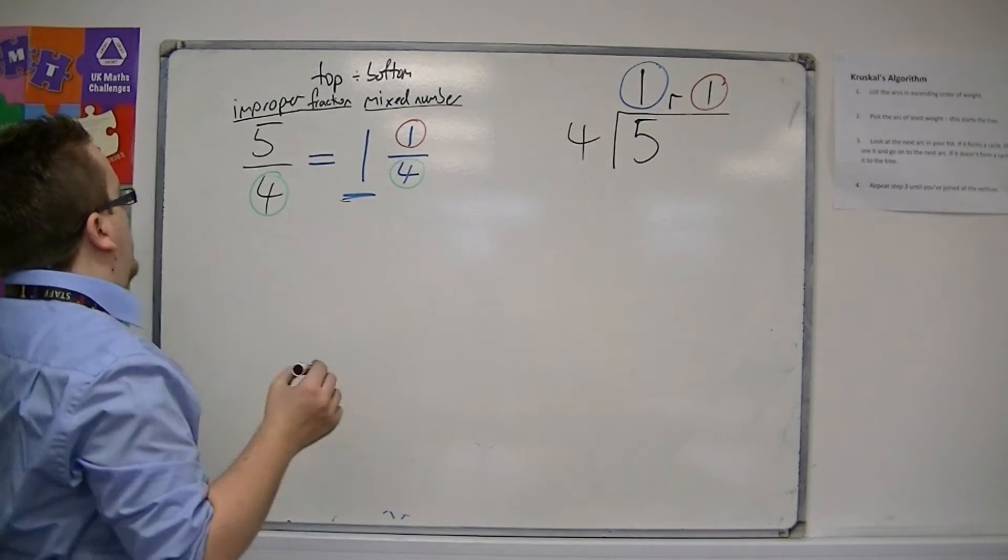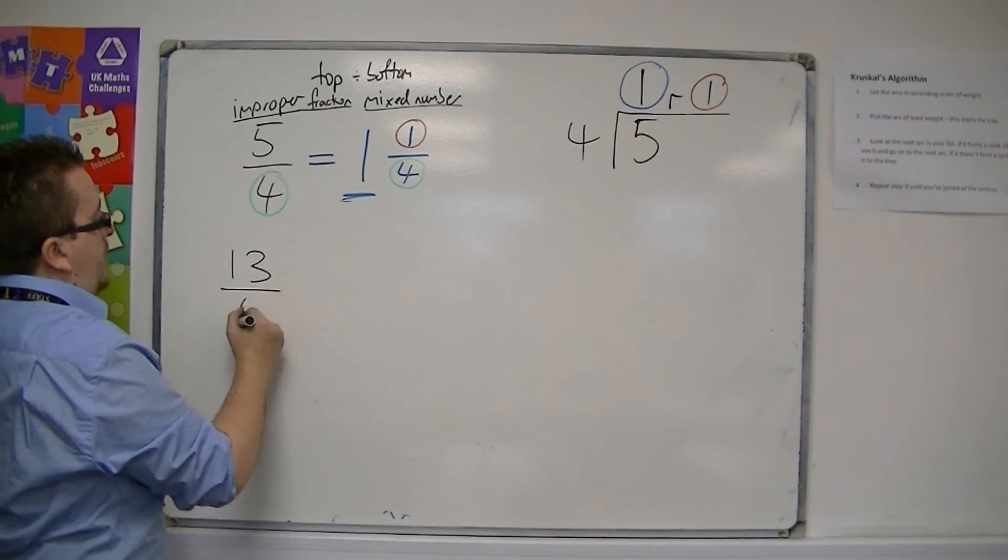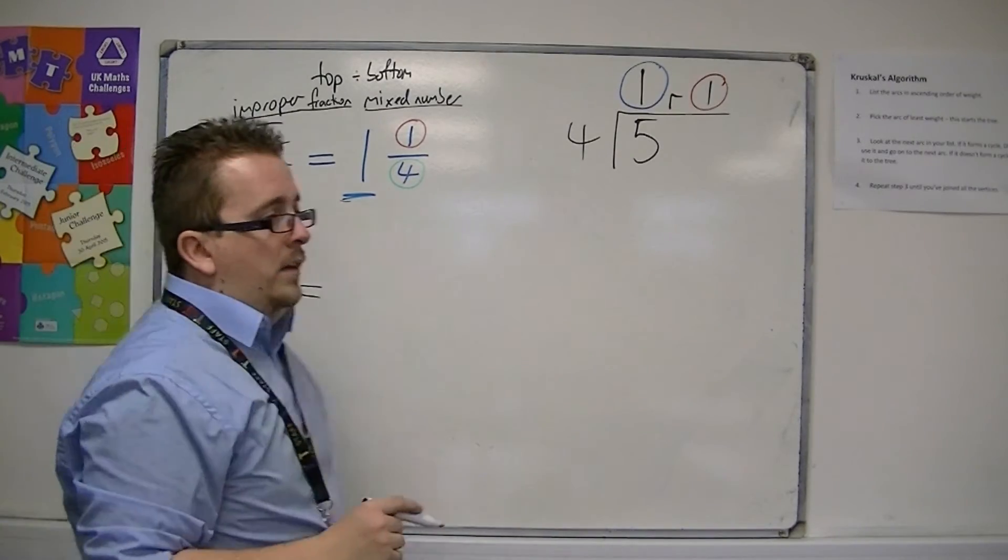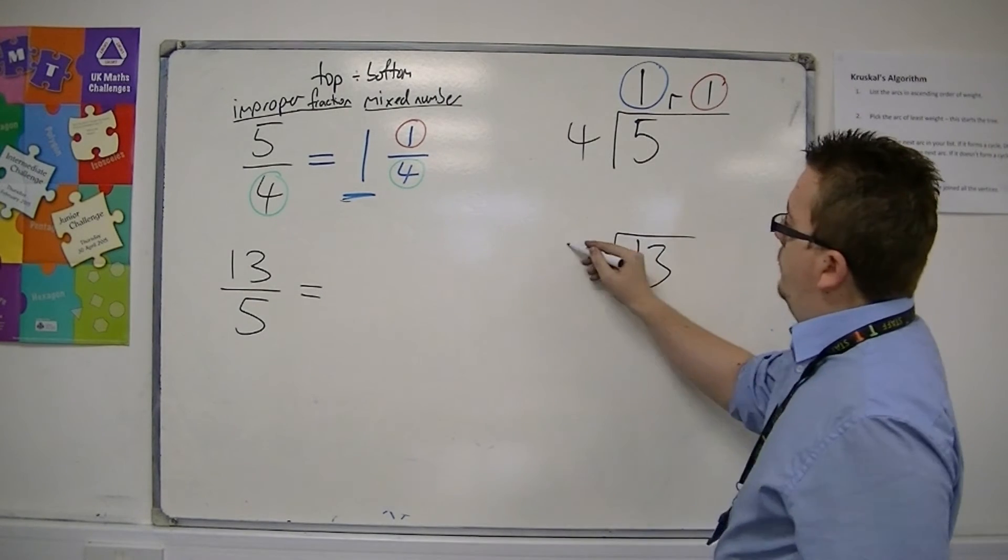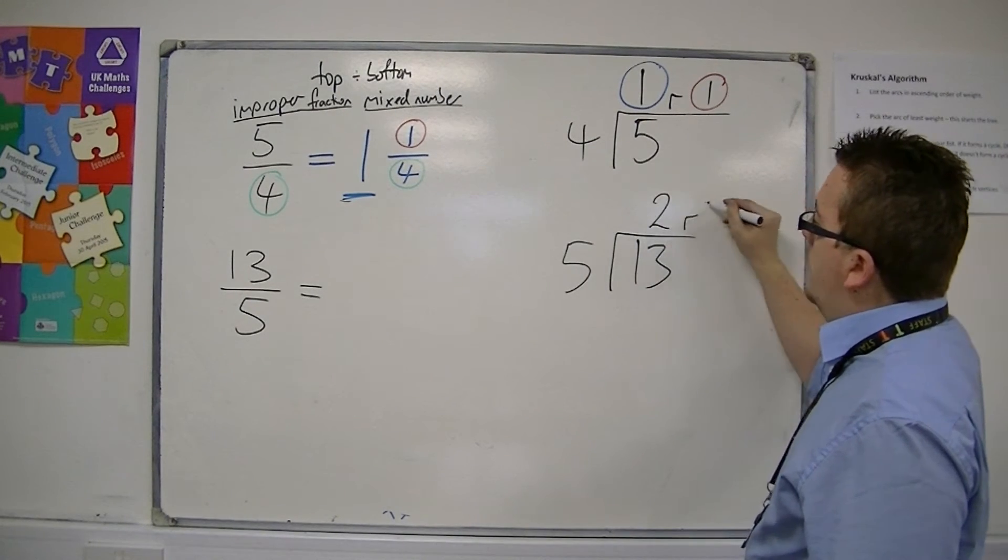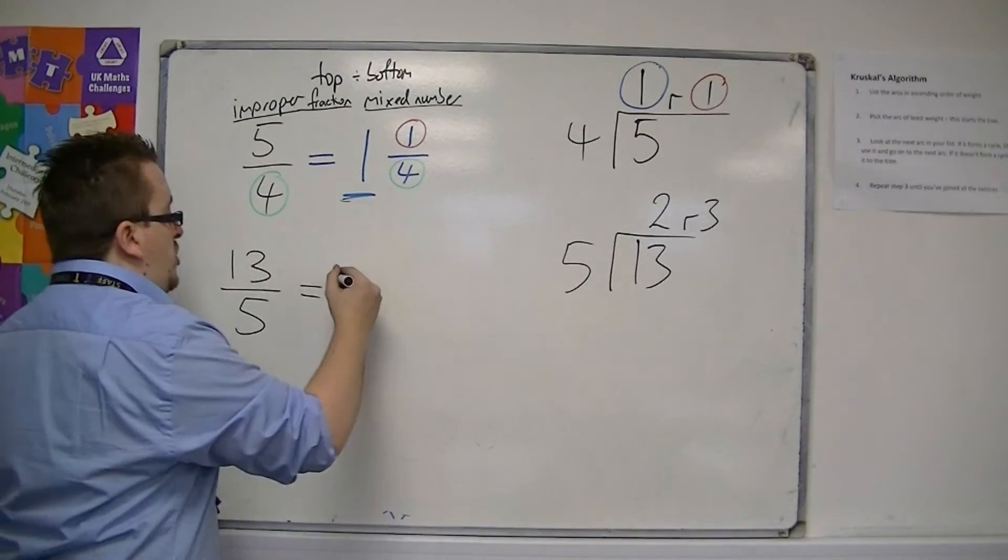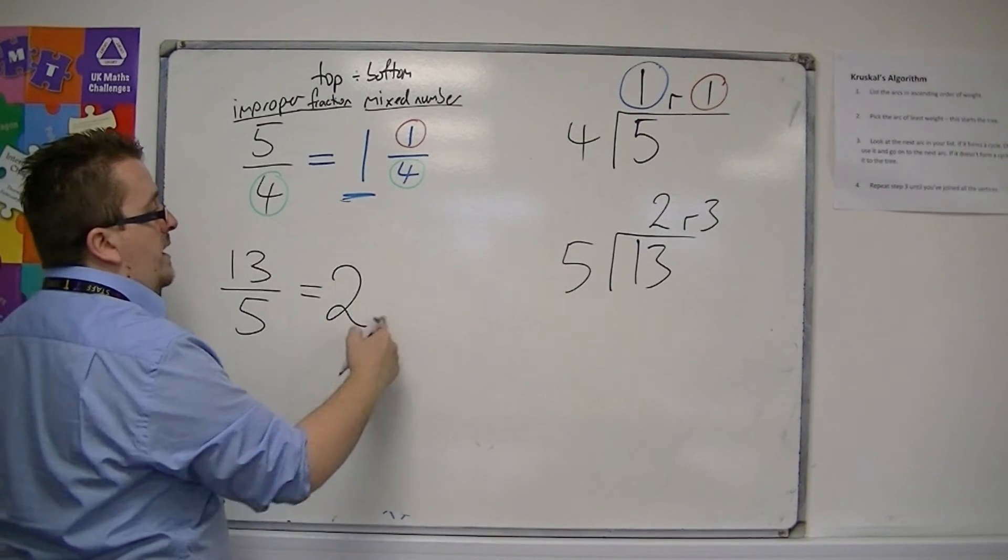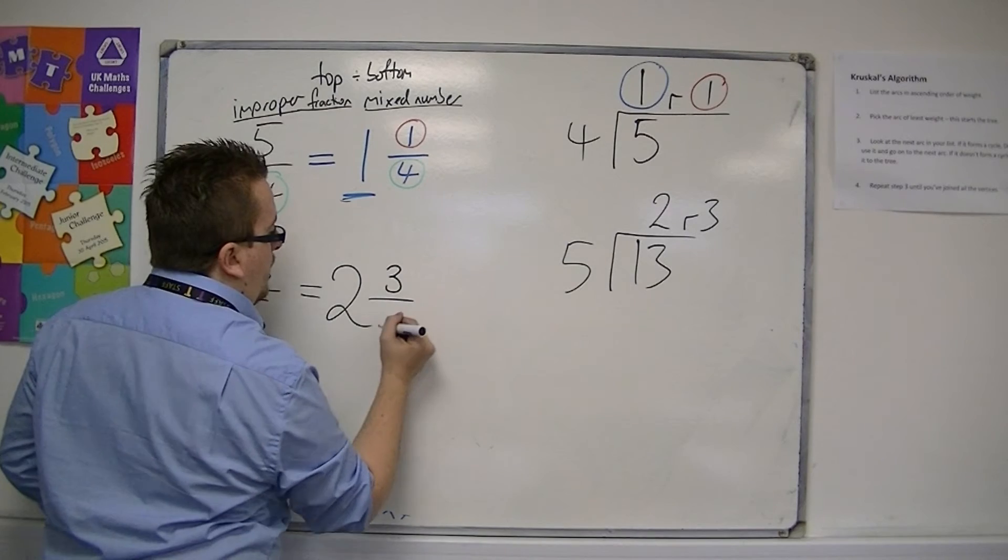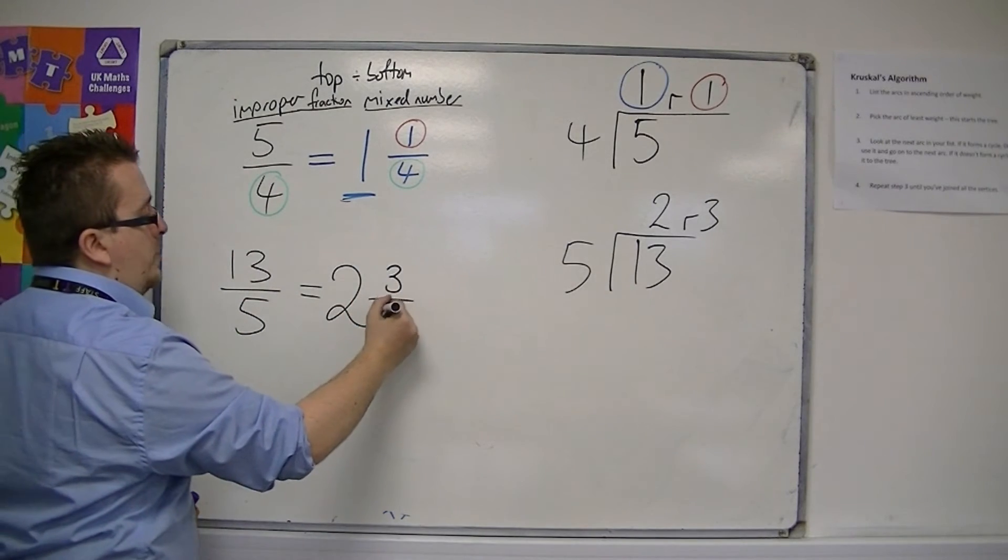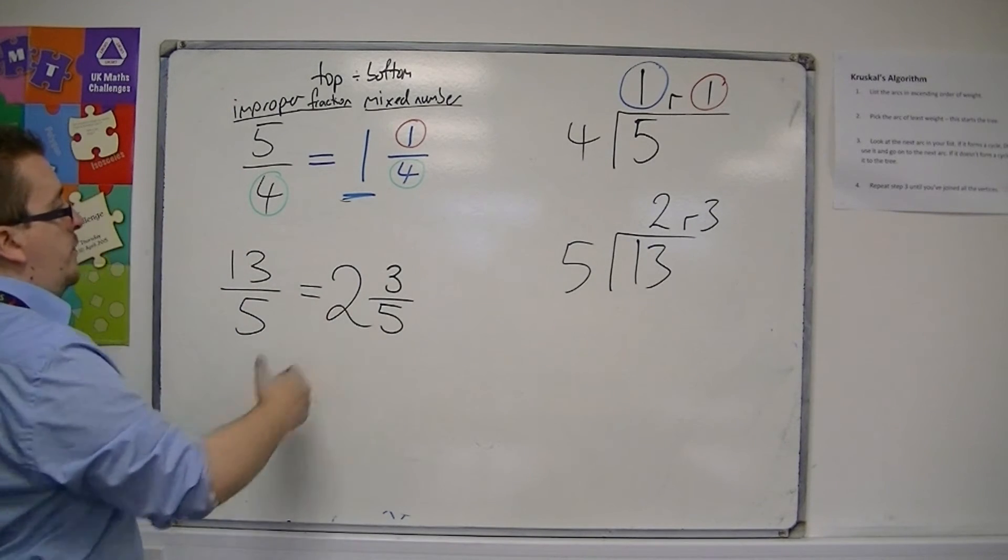So let's look at another one. Let's say I had 13 over 5. So you can do 13 divided by 5, and you get 2, remainder 3. So the 2 is the large unit number, and the remainder goes as part of the new fraction. The denominator stays the same, so 2 and 3 fifths.